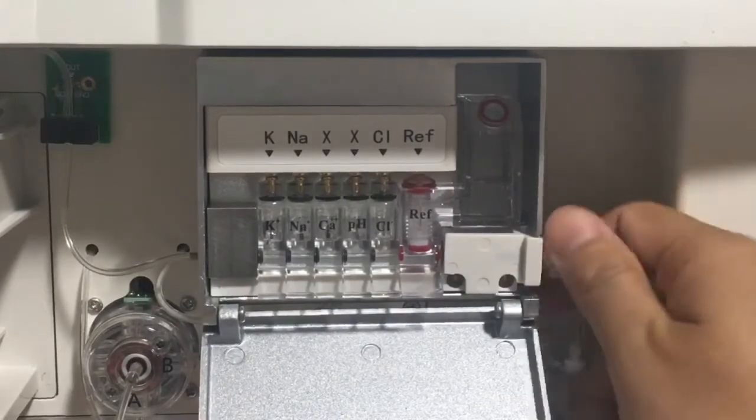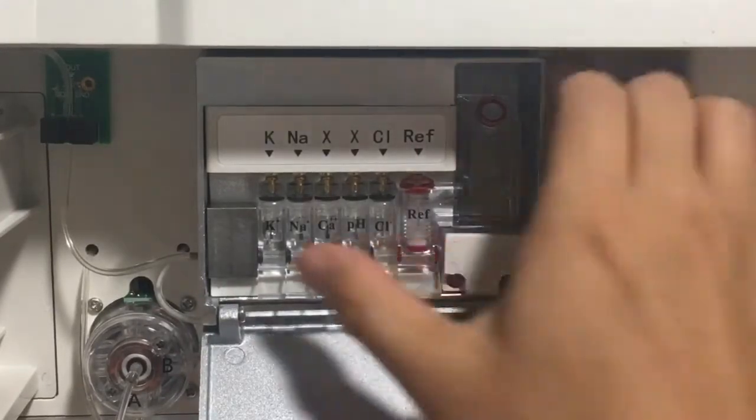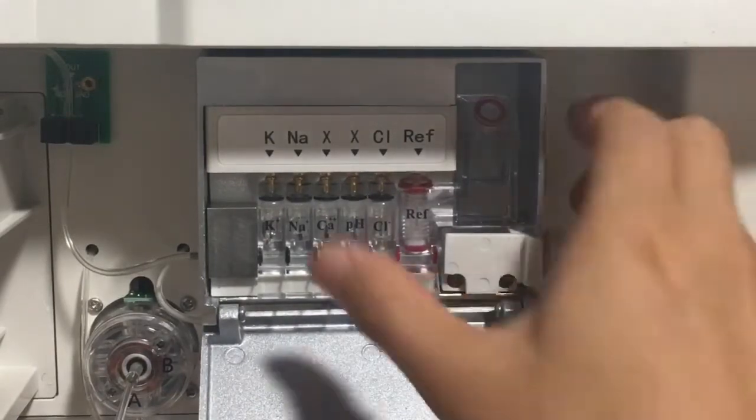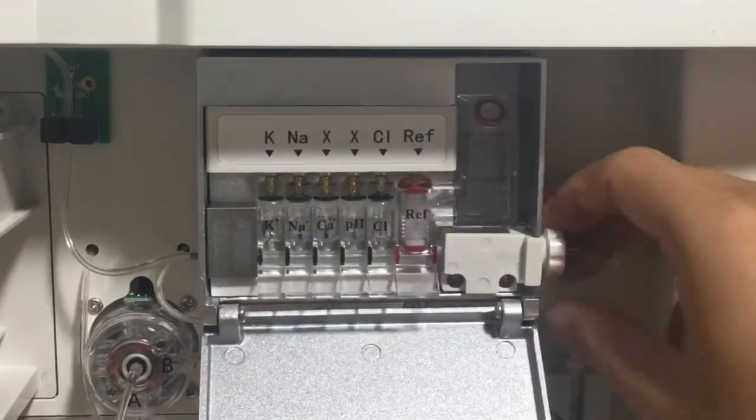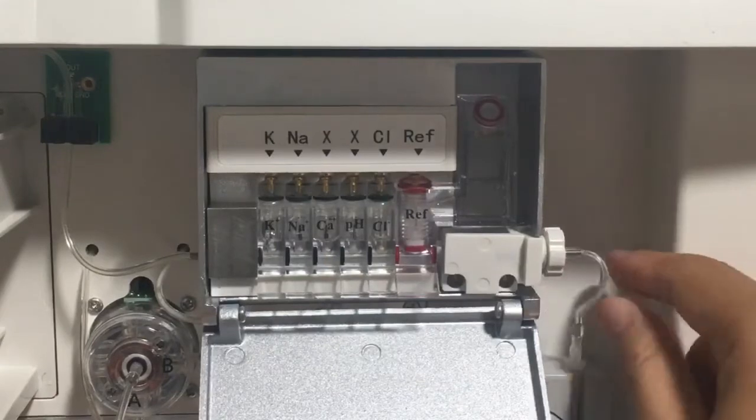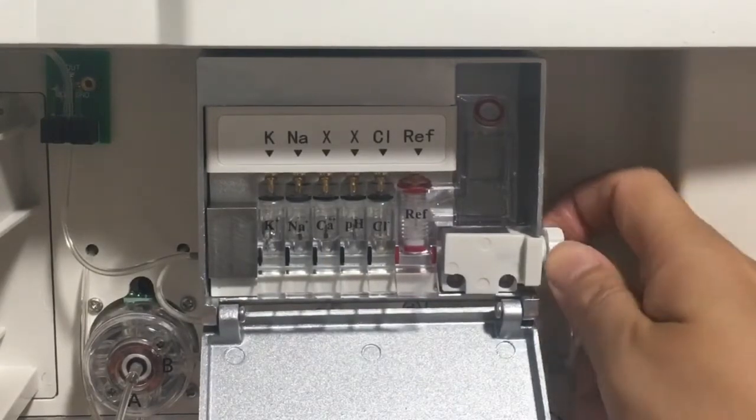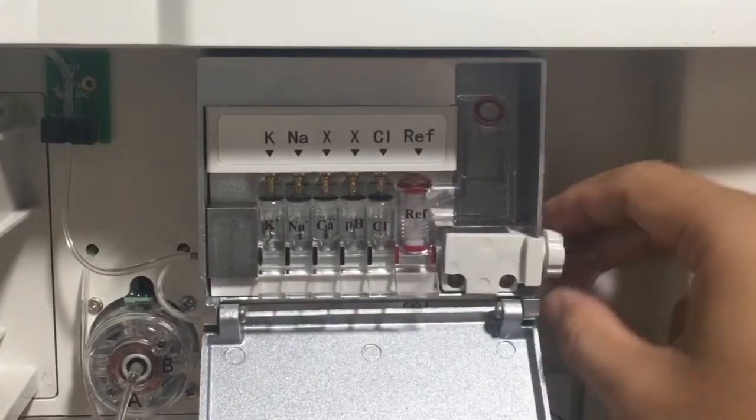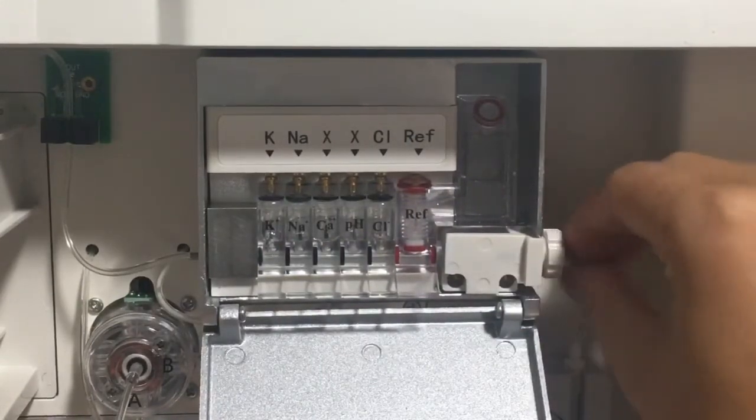And then tighten the knob. We use our finger to press the electrode to keep them in line. Also, we need to pay attention to the pipe here. Do not fold the pipe.